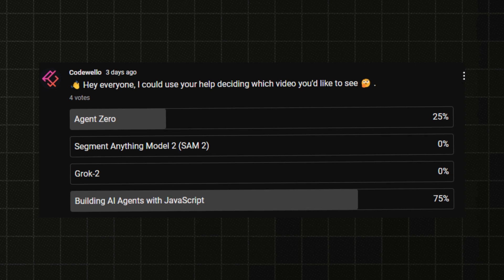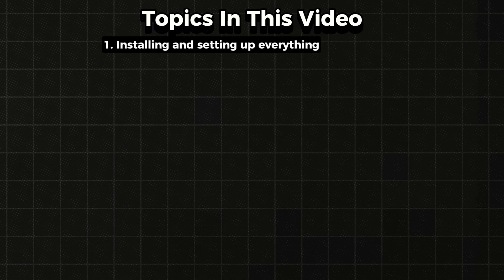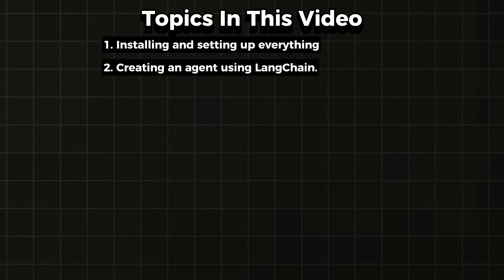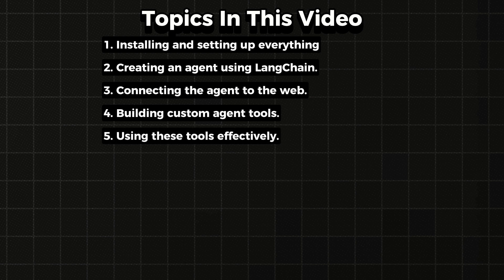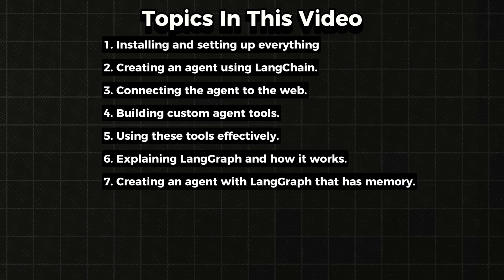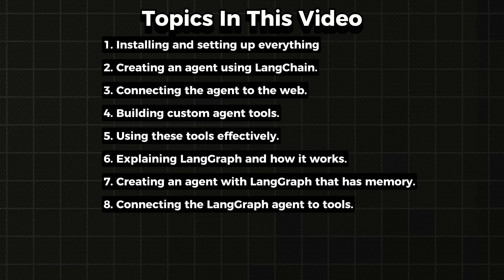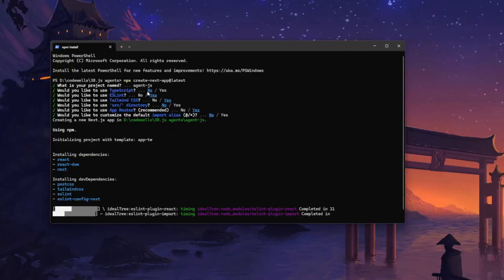This is going to be the video for today. We will cover: installing and setting up everything needed to get an agent up and running in Next.js; creating an agent using LangChain; connecting this agent to the web; building custom agent tools and how to use them; explaining what LangGraph is and how it works; creating a LangGraph agent with memory; connecting it to tools; and finally testing our agents.